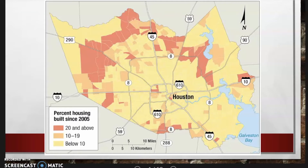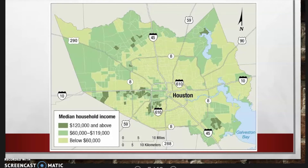According to the concentric zone model, we can see this in Houston. We can see this in the age of housing, where housing is newer in the outer rings of the city than in the inner rings. The percent of housing built since 2005, shown in pink in the outer ring, demonstrates the concentric zone model in Houston. We can also see the sector model in Houston through the distribution of high-income households — median household income is highest in the sector to the west, above $120,000.